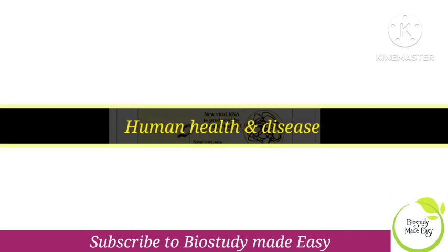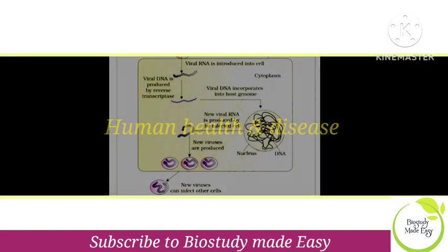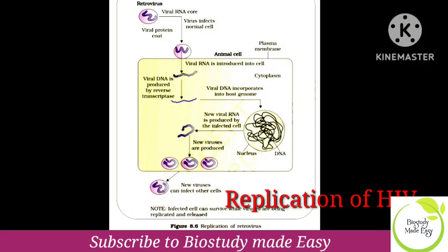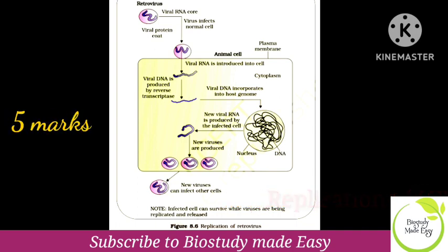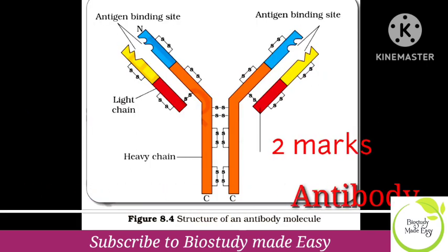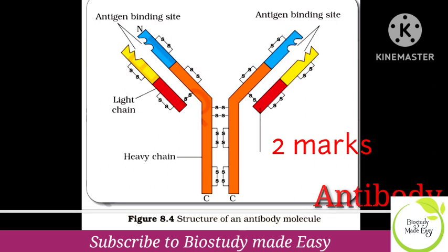Next chapter is Human Health and Diseases. In this chapter, very very important five-mark diagrams are: replication of HIV virus, and Plasmodium life cycle — both are five marks. Besides these two diagrams, there is also the antibody diagram for two marks. The antibody diagram is very important and frequently asked.